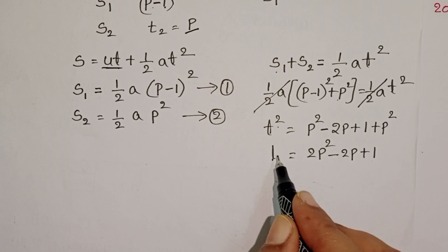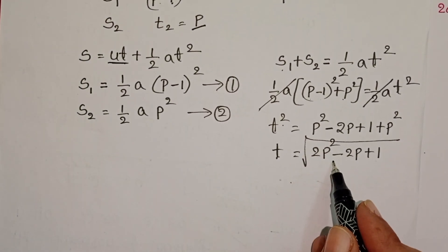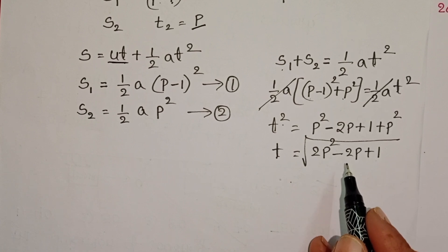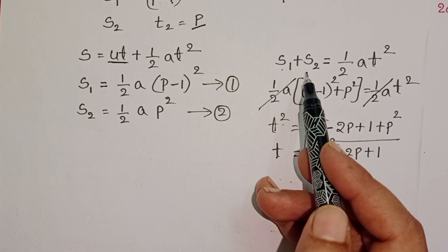This square goes to the RHS side, it becomes square root. So T equals square root of 2P square minus 2P plus 1. This is the time taken by the body to cover the total distance S1 plus S2.